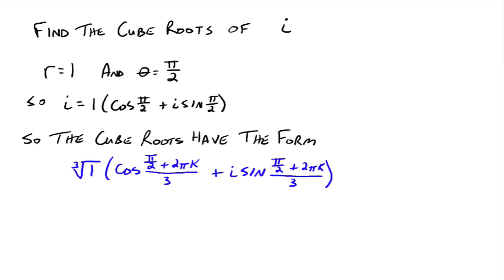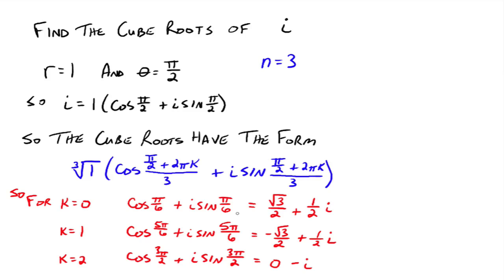The cube roots have the special form: the cube root of 1 times cosine of (pi over 2 plus 2πk) all divided by 3. We let k equal 0, 1, and 2. For k equals 0, plugging in gives (pi over 2 plus 0) divided by 3, which goes to pi over 6. So the first root is 1 times cosine of pi over 6 plus i sine pi over 6, which equals the square root of 3 over 2 plus one-half i. If you cube that number, you get back i.